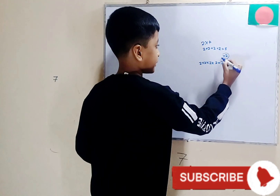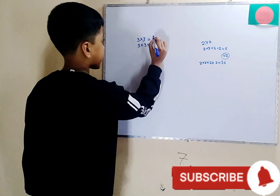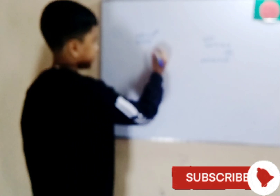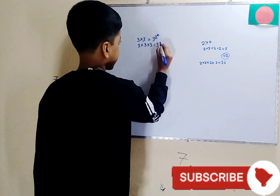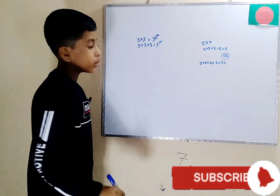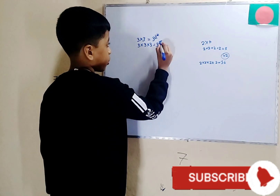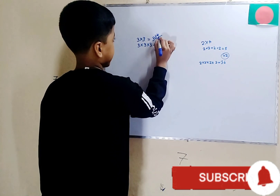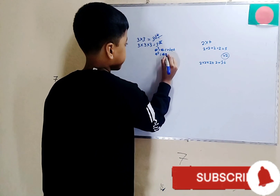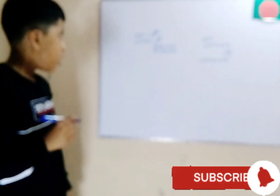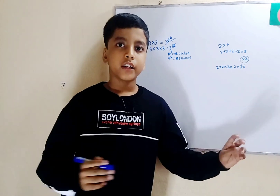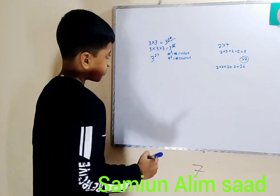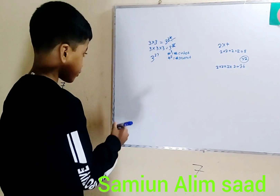Three multiplied by three is written as three squared, or three to the second power. That small number is called the power. Three times three times three is three to the third power, or three cubed. Any number raised to three is called that number cubed, just like any number raised to two is called squared. So our long example of three times three 27 times is simply written as three to the power of 27.